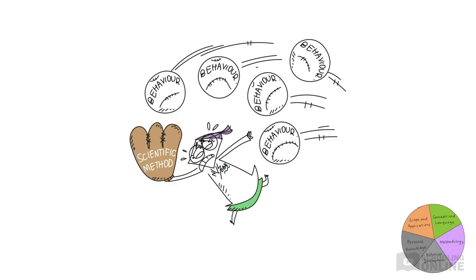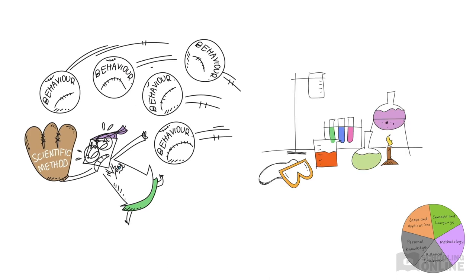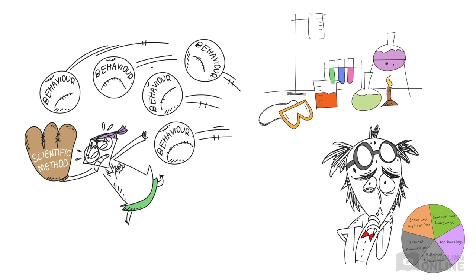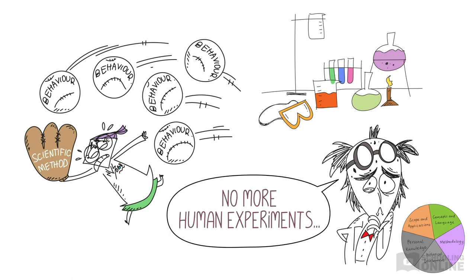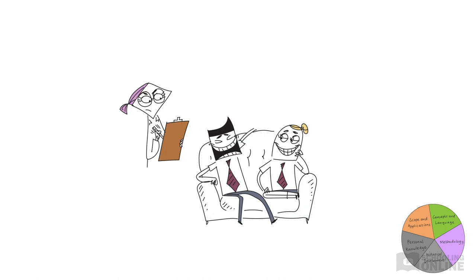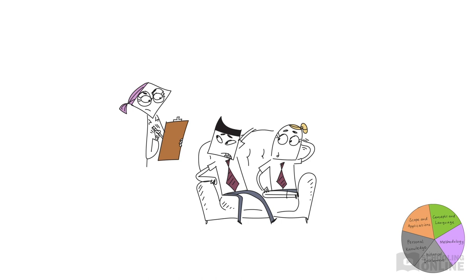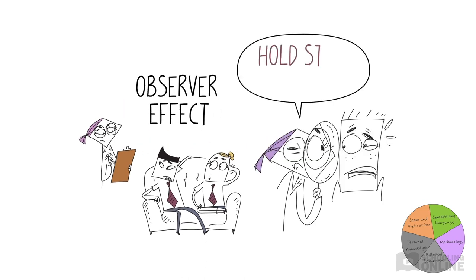But there's a catch. It can be pretty challenging to study human behaviour using the scientific method. First of all, researchers in the human sciences must follow ethical guidelines, which limits their ability to conduct experiments on human beings. Secondly, problems can arise when you observe human behaviour. Some individuals behave differently when they're being watched — this is called the observer effect. Also, some influences on human behaviour can't be observed, such as people's thoughts.